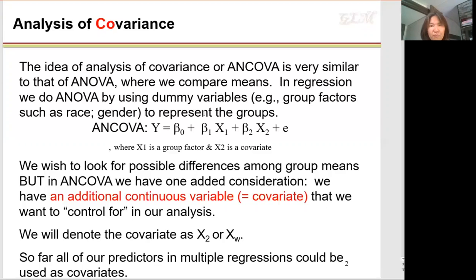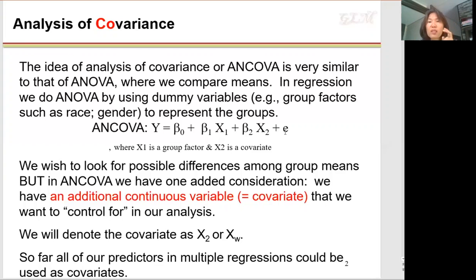As you see in this equation, X1 is a group variable — for example, gender group or urbanicity — and X2 is a covariate, meaning a continuous variable. Whenever you interpret beta 1, you need to control for the other effect. Beta 1 represents the amount of change in Y for one unit change in X1, controlling for the other variable.